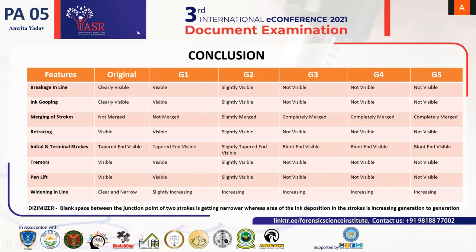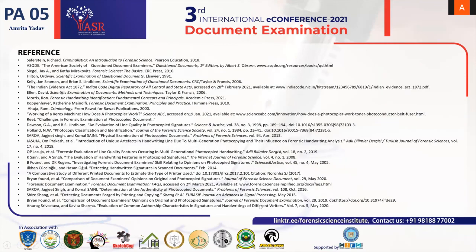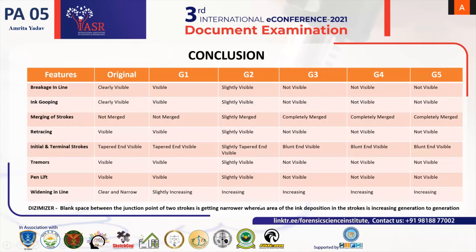An image analysis software called Dismizer was used, which allows precise measurement of area and length, and calculative analysis showed an increase in line widening along with features like pen lift and tremor. The conclusion reached is that there is a high level of distortion in generations three, four, and five. Up to generation two, an expert can make an opinion, but key minor characteristics are lost in further generations. Thank you, that's all from my side.